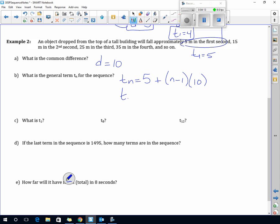What's term 1? We already figured it out, that is 5 meters. Term 8, if I sub 8 in for n here, I get 80 minus 5, which is 75 meters. And if I sub 12 in for n, it's 120 minus 5 is 115 meters.